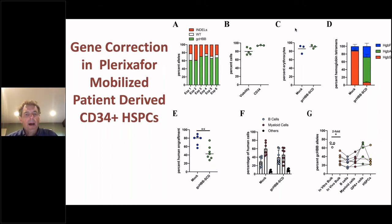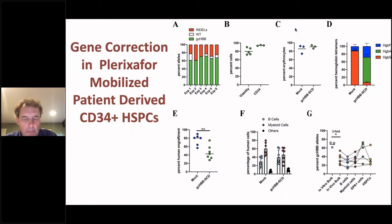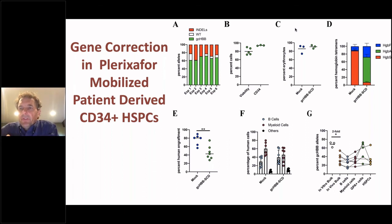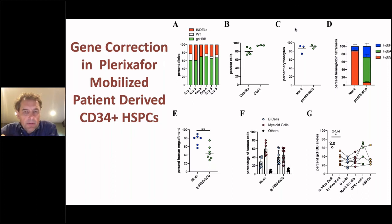These cells engraft after transplantation into immunodeficient mice and generate multilineage differentiation. In contrast to non-mobilized CD34 cells, mobilized gene-corrected cells have a slight engraftment disadvantage. Nonetheless, across multiple lineages we see an overall allele gene-correction frequency of 30% or above. Notably, in early red blood cell precursors in the bone marrow marked as GPA-positive, the level of gene correction is actually higher — 50% to 60% or more.